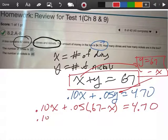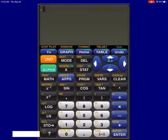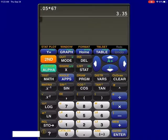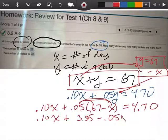So now the first thing I'm going to do here is I'm going to multiply. So I'm going to take my calculator 0.05 times 67, 0.05 times 67 is $3.35. A 0.05 times a minus x is a minus 0.05x equals 4.70.